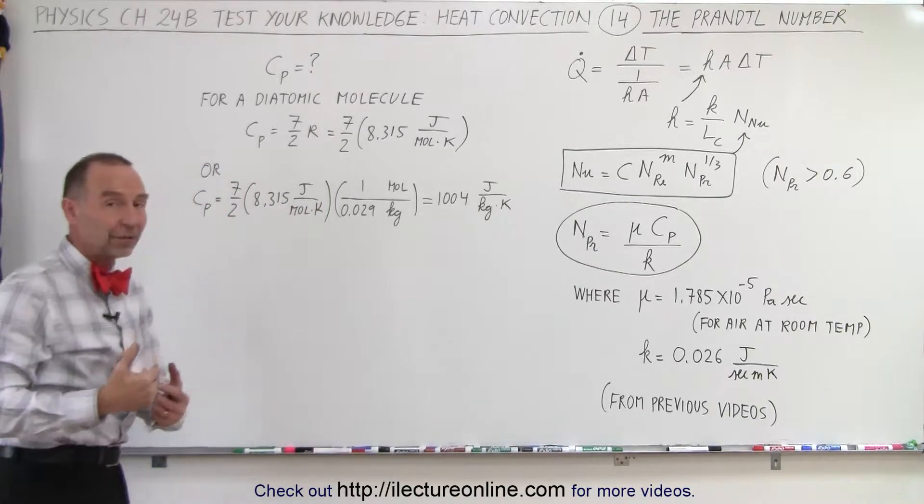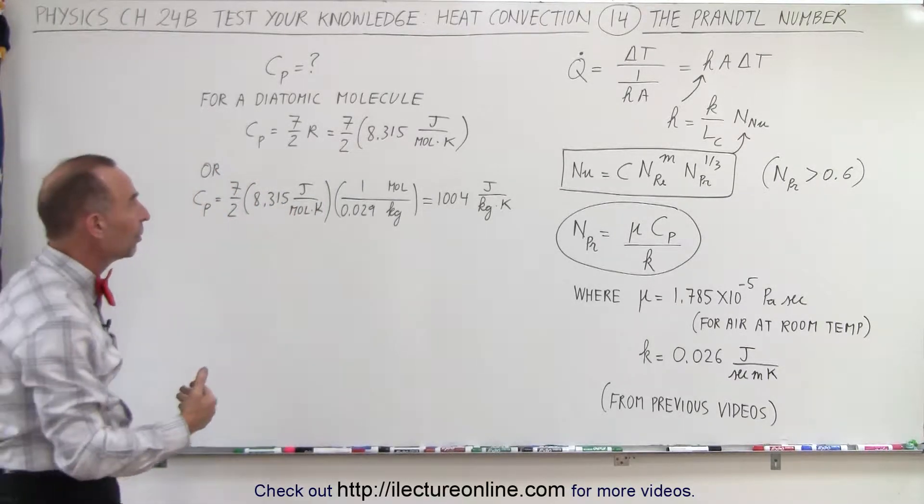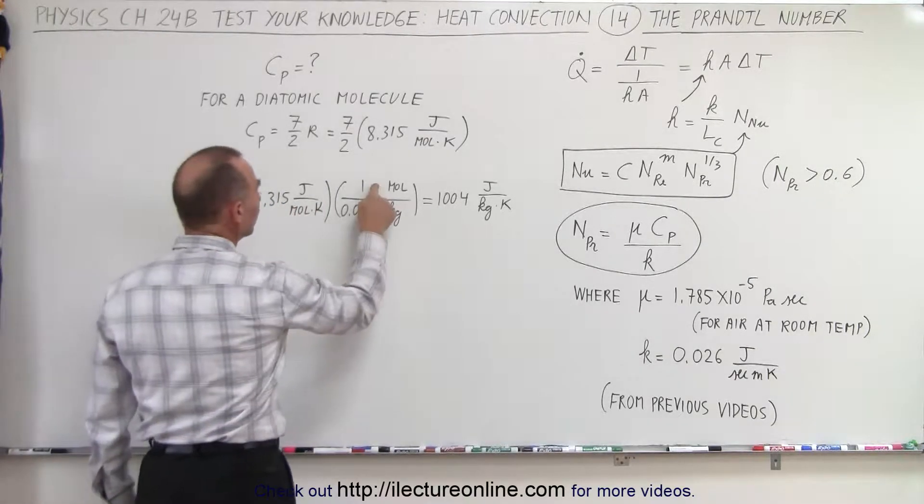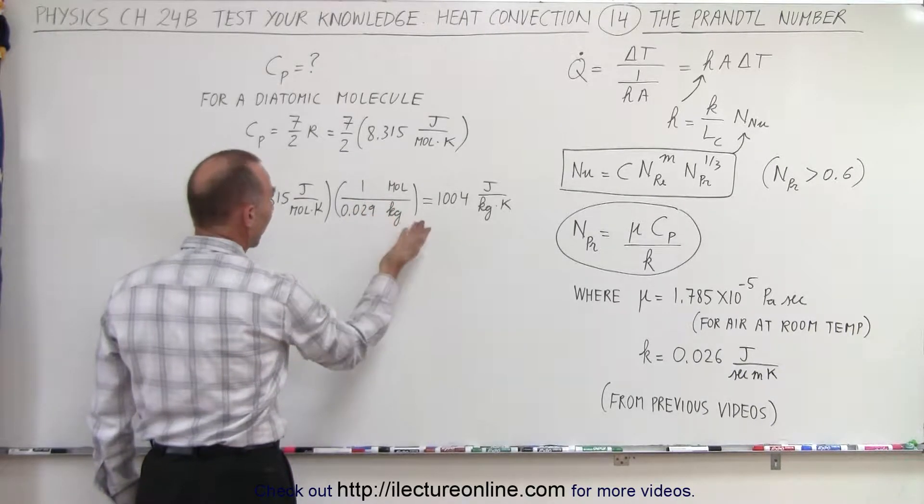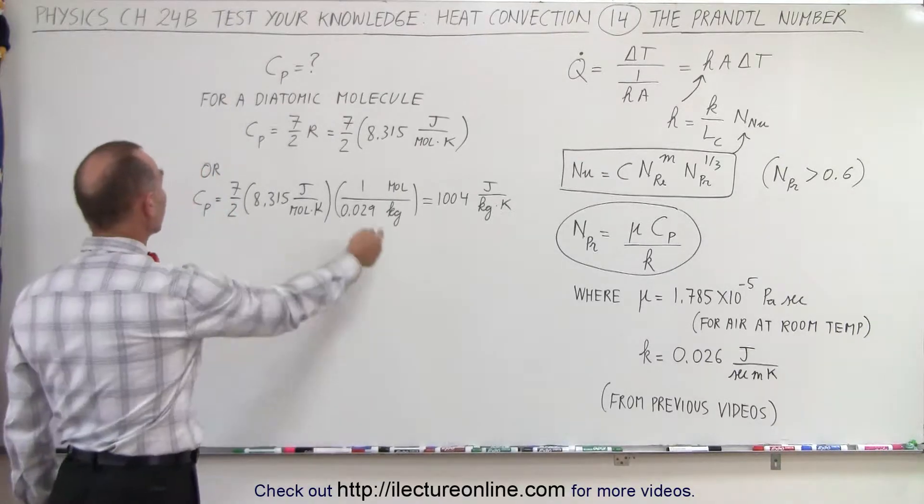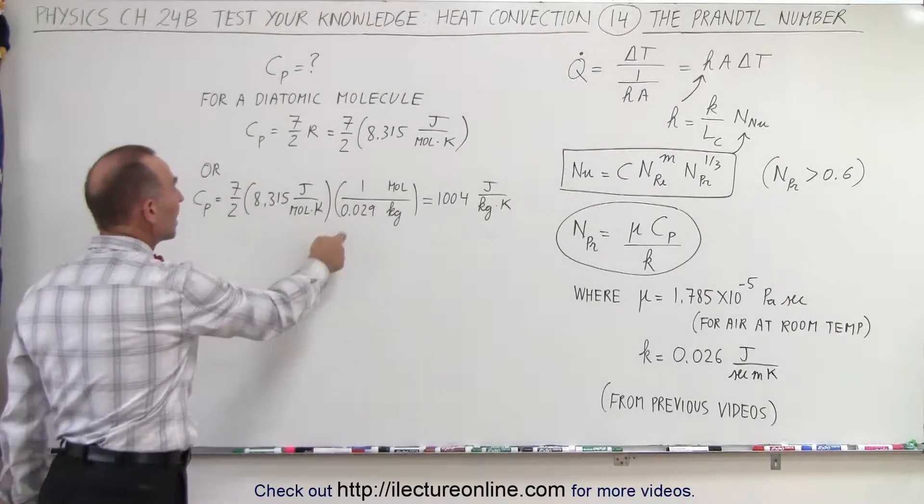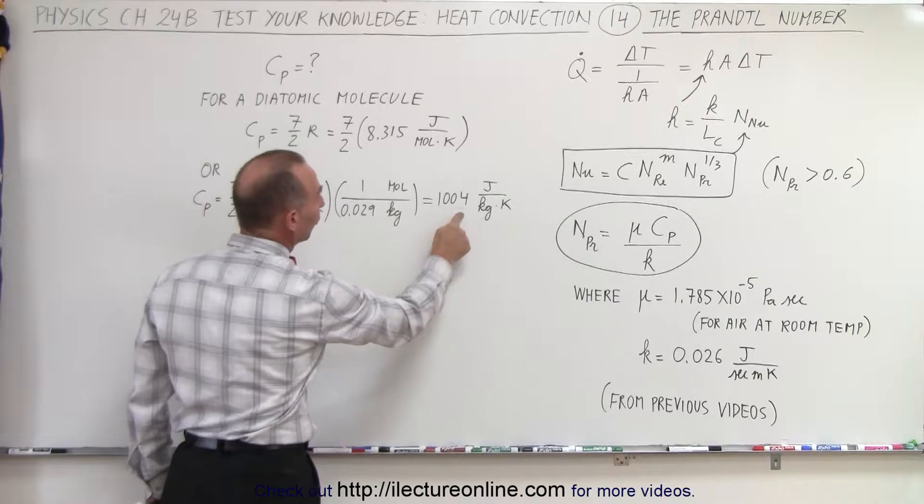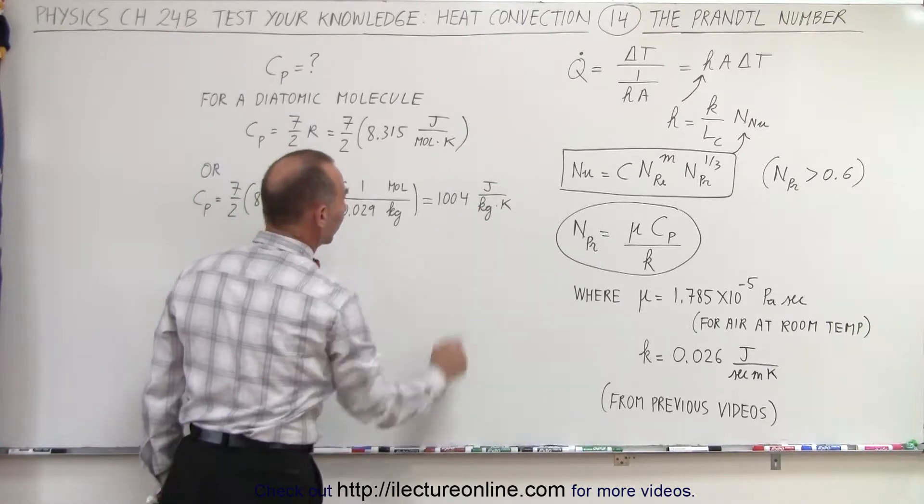Now we have to convert that to per kilogram. So the ratio is that one mole has a mass of 0.029 kilograms on average between nitrogen and oxygen. And so if we then multiply the specific heat we end up with 1004 joules per kilogram per Kelvin.